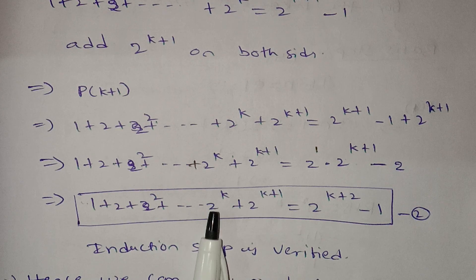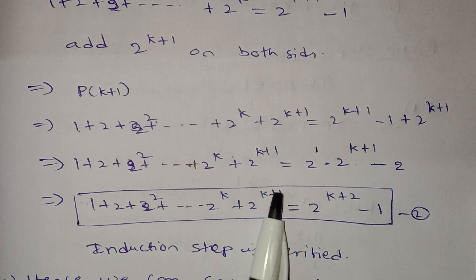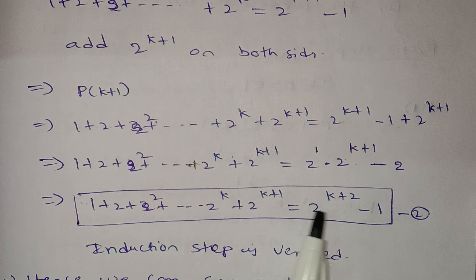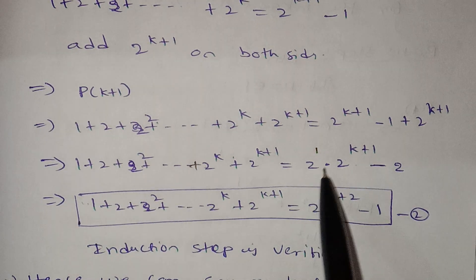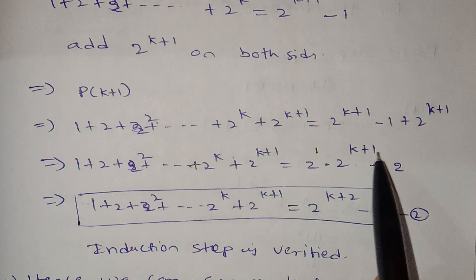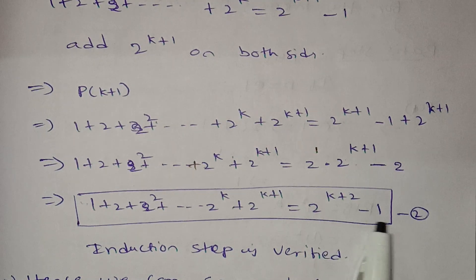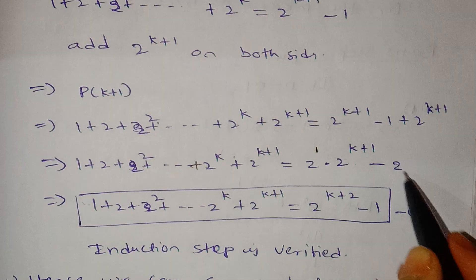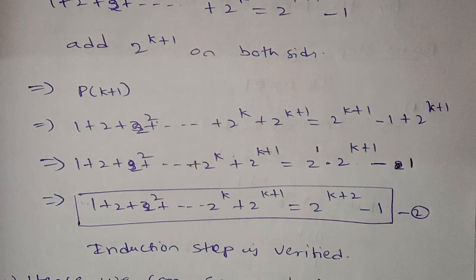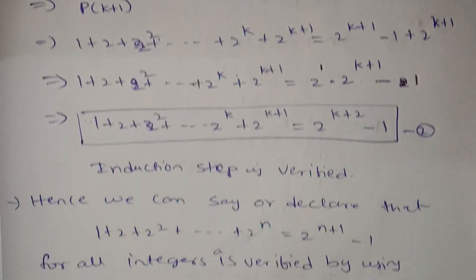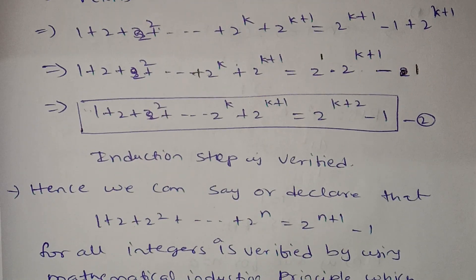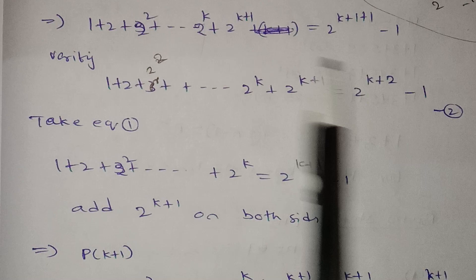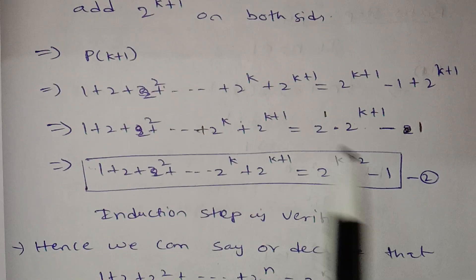Therefore: 1 + 2 + 2² + ... + 2^k + 2^(k+1) = 2^(k+2) − 1, which is exactly what P(k+1) states. Minus 1.